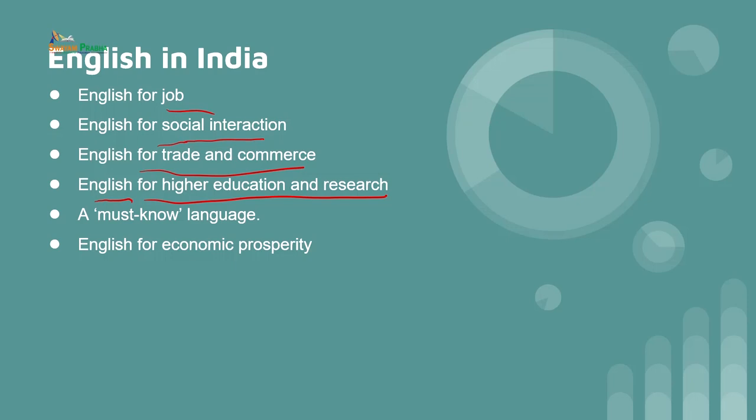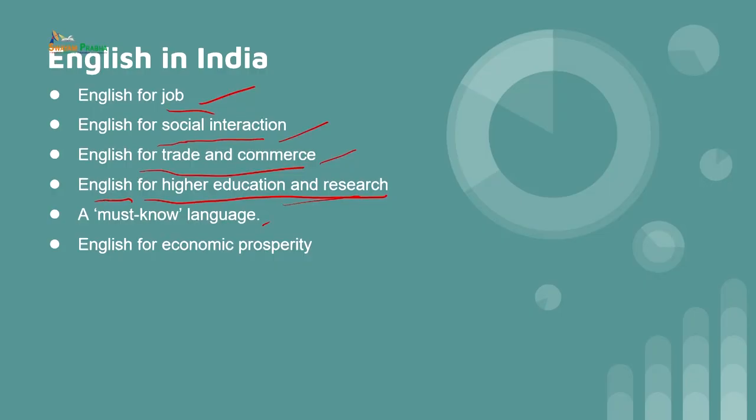The other point is that English is a must-know language. All these points — English for job, English for social interaction, English for trade and commerce, English for higher education and research — will comprise and make you a person who should and must know English language. Therefore, English is basically a language which will help you in prospering and will bring economic prosperity.